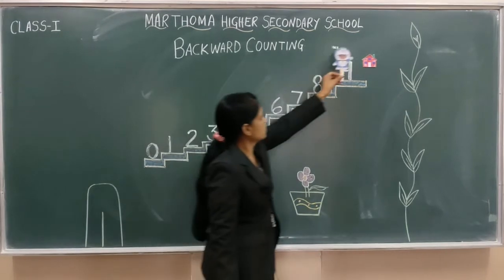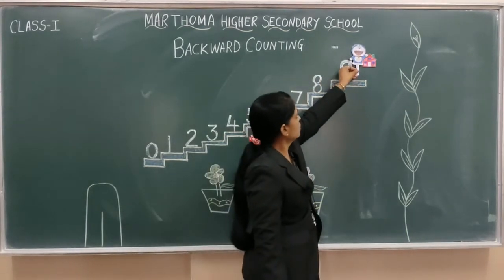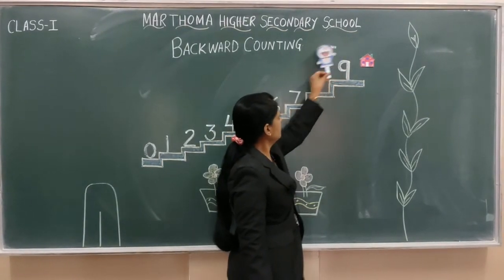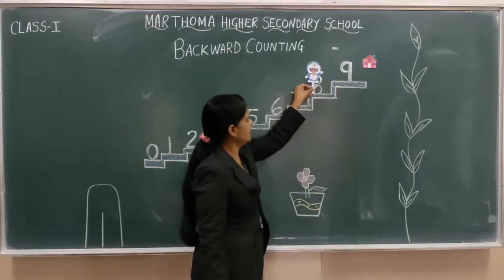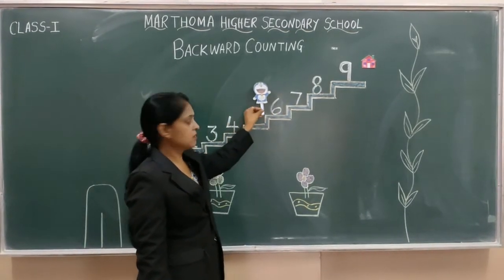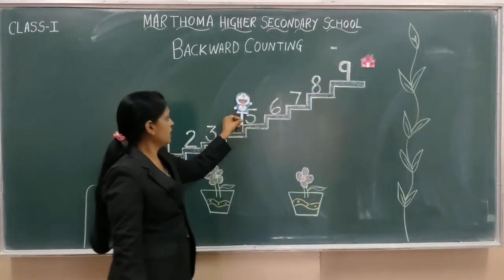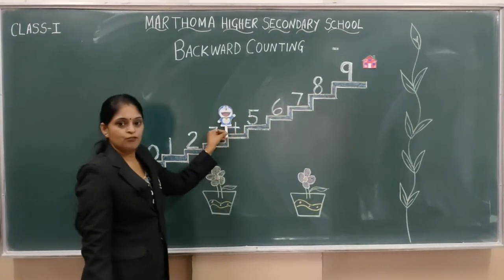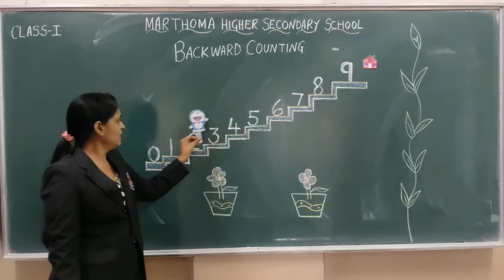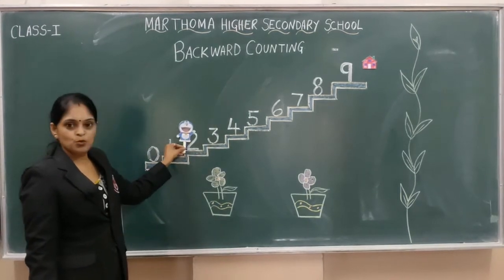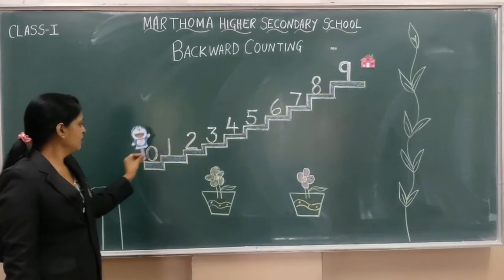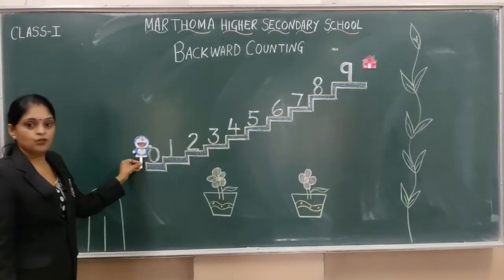So he started counting: 9, 8, 7, 6, 5, 4, 3, 2, 1, 0.